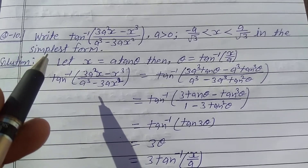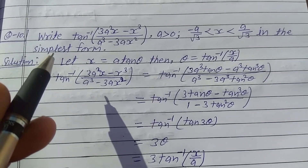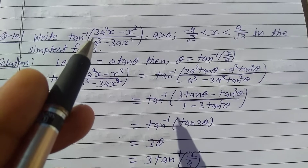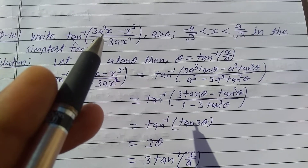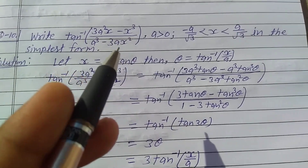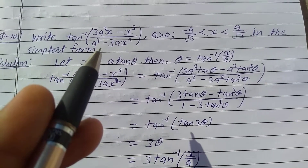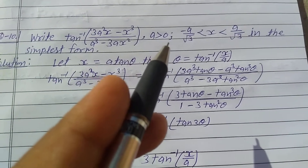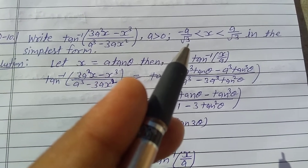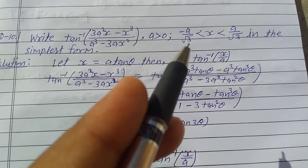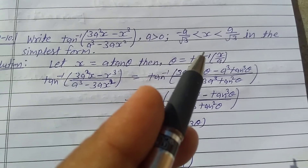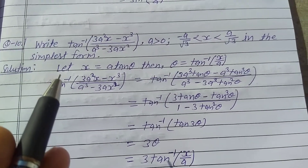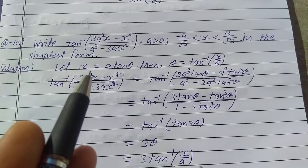Explain question number 10, Exercise 2.2, Class 12th. Write tan⁻¹ of (3a²x minus x³) upon (a³ minus 3ax²), where a is greater than 0 and x is greater than minus a upon root 3 and less than a upon root 3, in the simplest form.